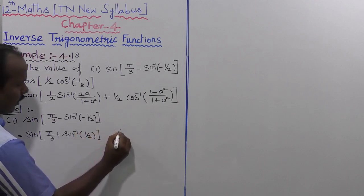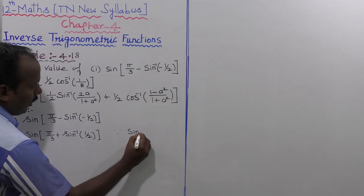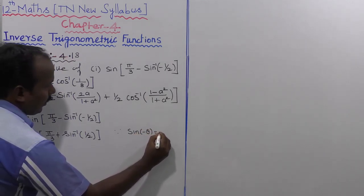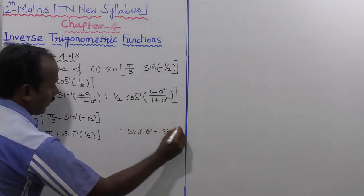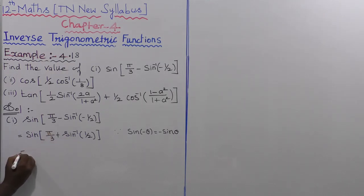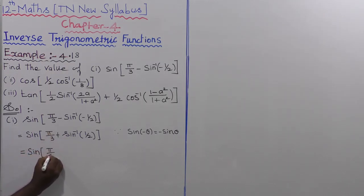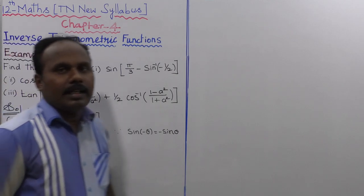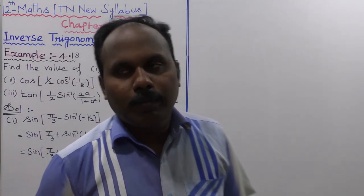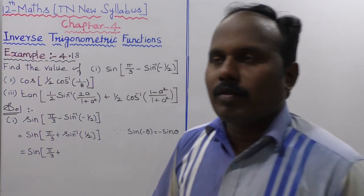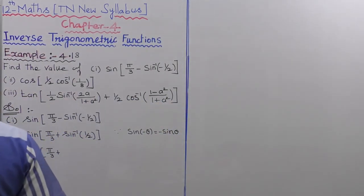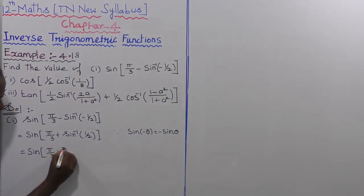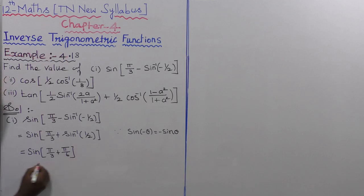Using the formula sin⁻¹(-θ) = -sin⁻¹(θ), the expression becomes sin(π/3 + sin⁻¹(1/2)). Now sin⁻¹(1/2) equals 30 degrees, and 30 degrees in radians is π/6.